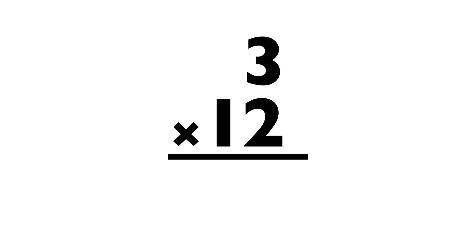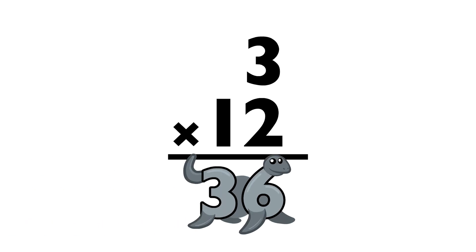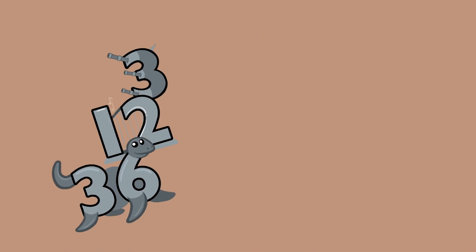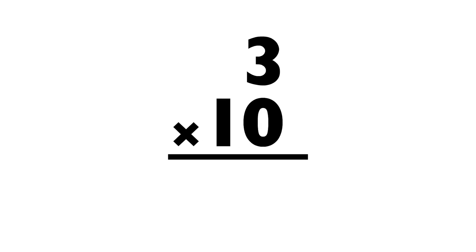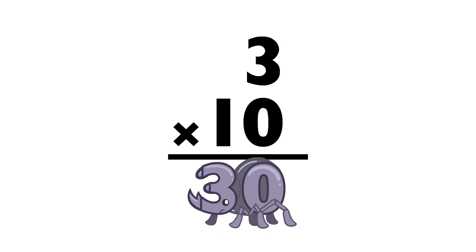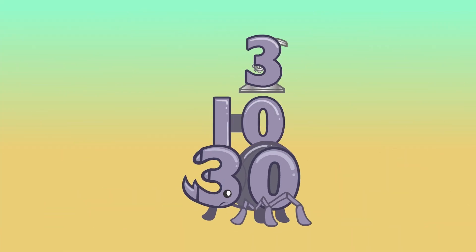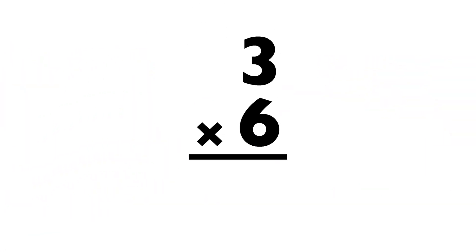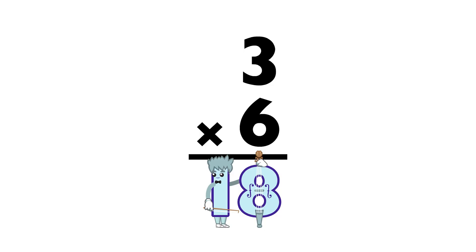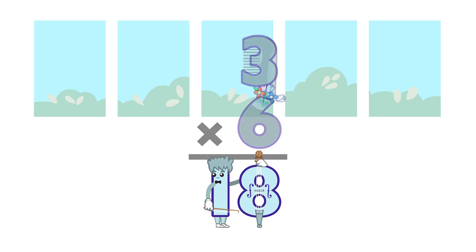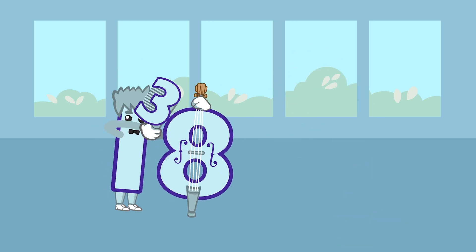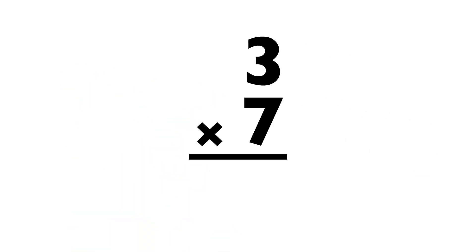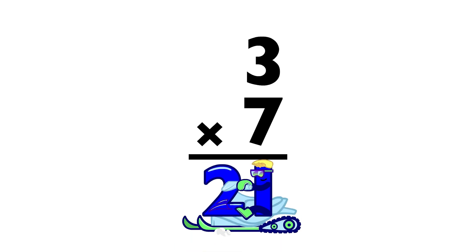Three times twelve equals — thirty-seven. Three times ten equals — thirty-five. Three times six equals — thirty-five. Three times seven equals twenty-one.